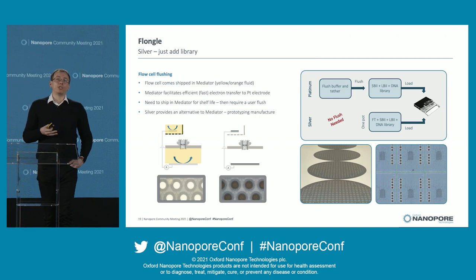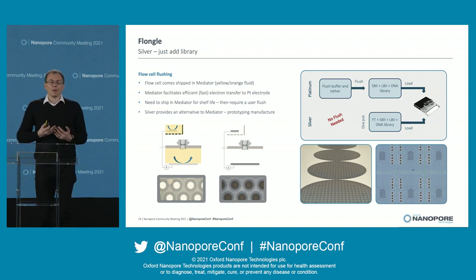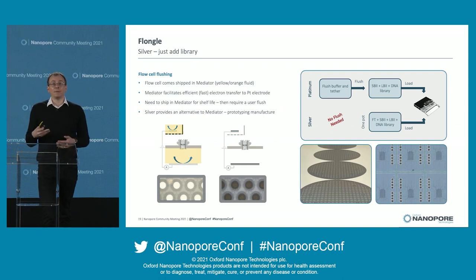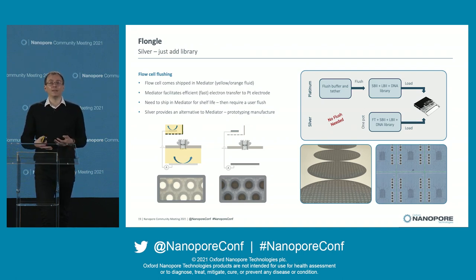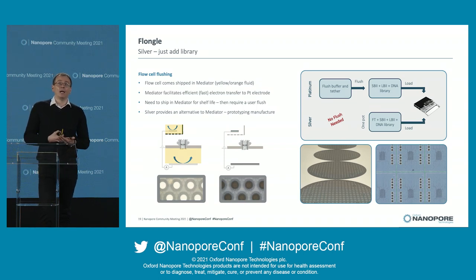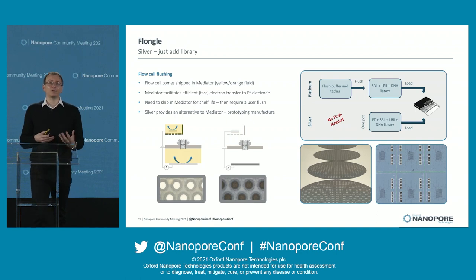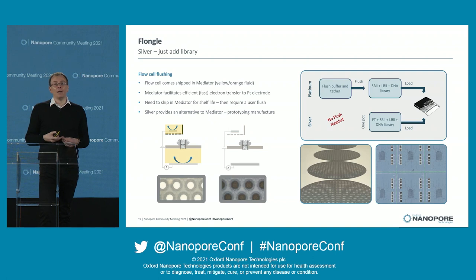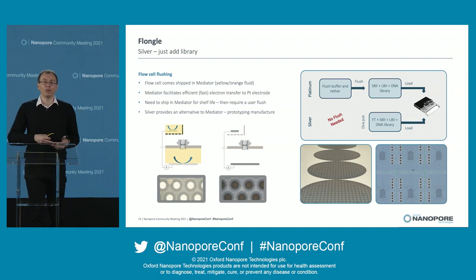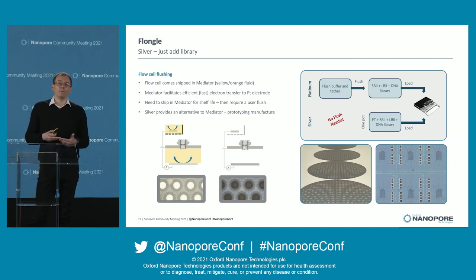Flongle is also a very good platform to prototype on. One thing we've wanted to do for some time is remove the need for you to flush your flow cell — both to make things easier for you to use, and because a lot of the product concepts Clive talks about, such as automated extraction and library preparation on a device, simply don't work if a human still has to come and pipette onto a flow cell. The flush exists because we're using the platinum system, and we've been looking at silver as an alternative. Last time I showed proof-of-concept data from handcrafted silicon chips; we've been pushing up the manufacturing and are getting close to a manufacturable process. We'll probably do early access on Flongle with these first, although it could be something we look at for MinION in the future.